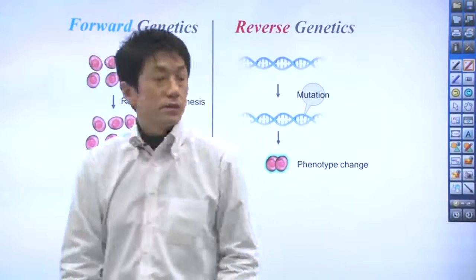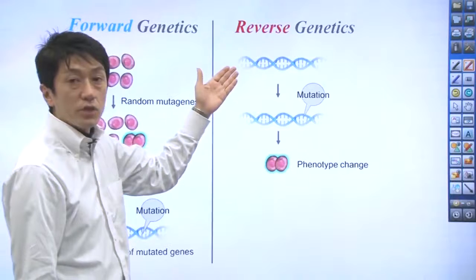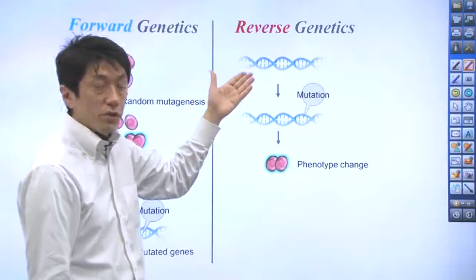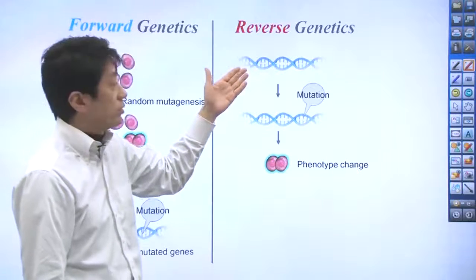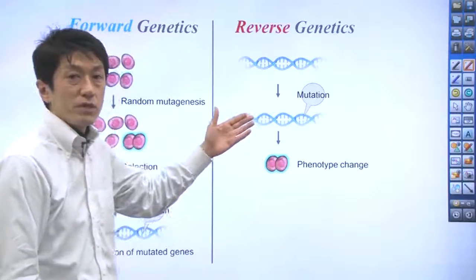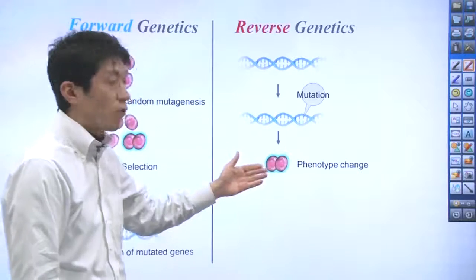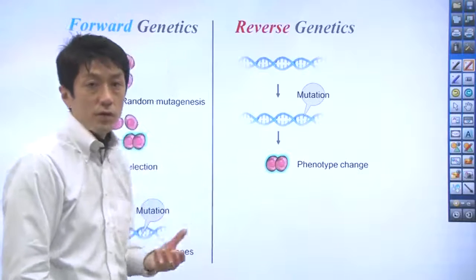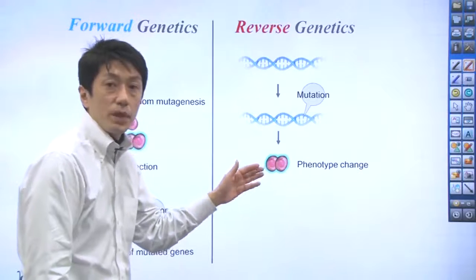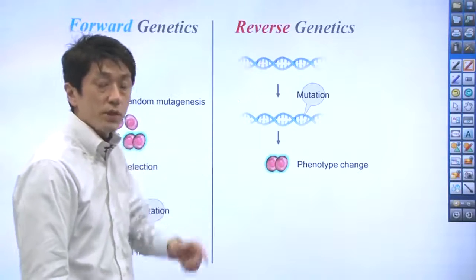On the other hand, reverse genetics starts with introducing a mutation into a specific gene. You start with a gene, but you don't know the cellular function of this gene. So you observe the phenotypic consequences of the mutation in the context of cells or even in whole organisms. For example, if you observe a problem in cell division, the mutated gene has a role in cell division.